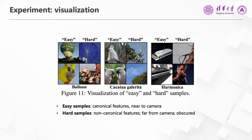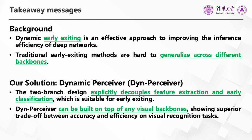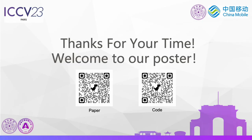Here we visualize the easy and hard samples selected by different exits of our model. It can be seen that easy samples usually contain canonical features, while hard samples could contain some non-canonical features. In summary, dynamic early exiting is an effective approach to improving the inference efficiency of deep networks. However, traditional early exiting models are hard to generalize across different backbones. Our two-branch design explicitly decouples feature extraction and early classification, which is suitable for dynamic early exiting. The proposed Dynamic Perceiver can be built on top of any visual backbones, showing superior trade-off between accuracy and efficiency on visual recognition tasks. Thanks for your time — for more details, please refer to our paper and code.